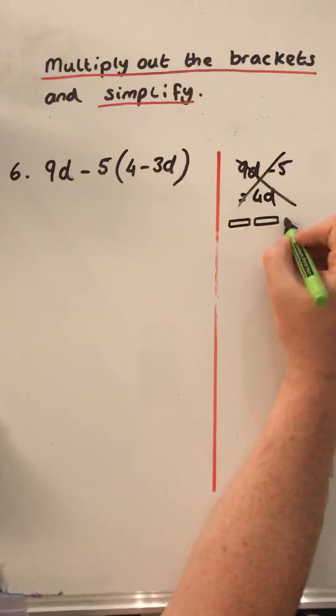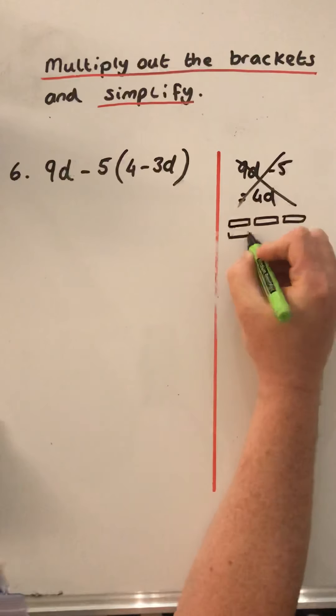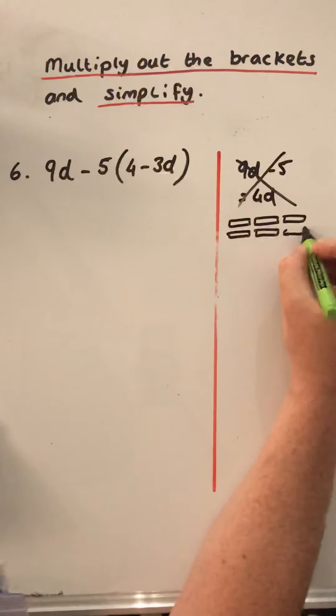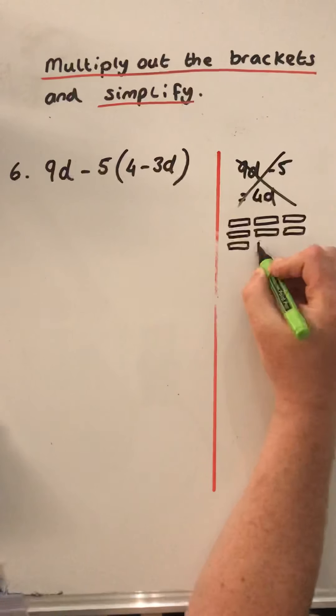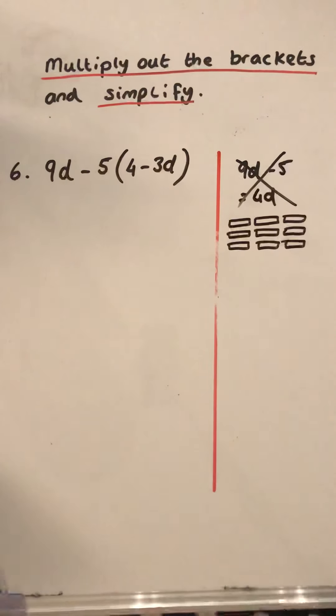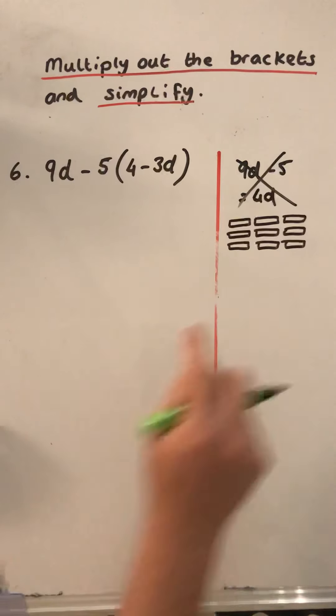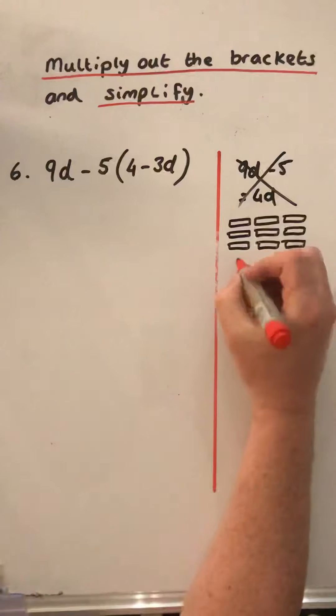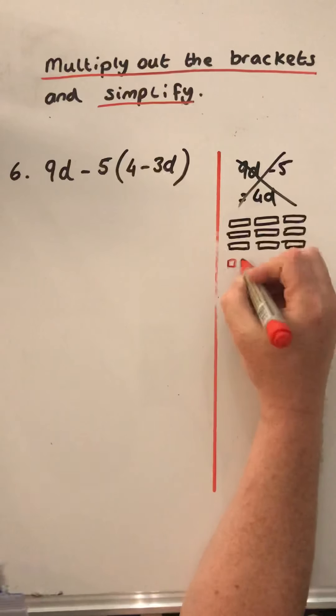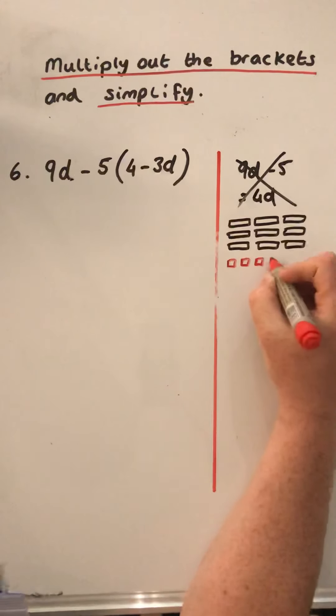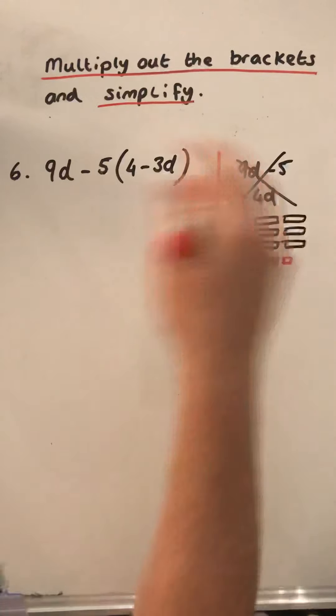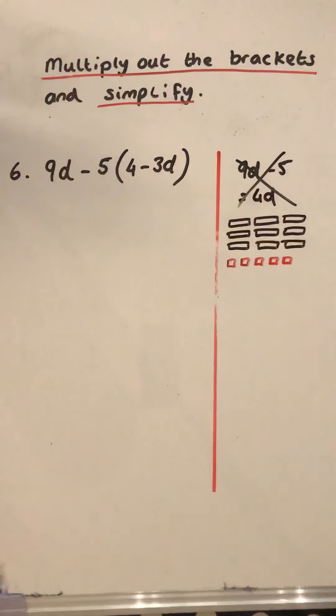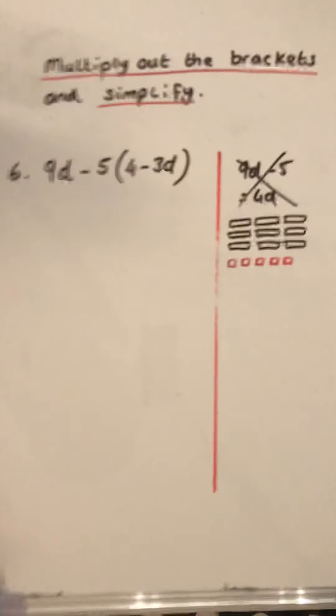So we've got 9 of them, counting 3, 4, 5, 6, 7, 8, 9. We've got 9 of them. They're of length d by 1. And we've got minus 5, so negative 5 ones. So visually they look totally different.